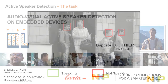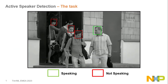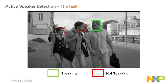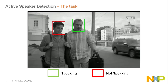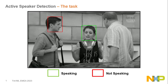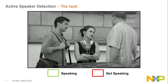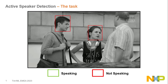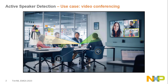What is audio-visual active speaker detection? It is the task of detecting who is speaking in a video by using both audio and visual modalities. Speakers are highlighted in green and non-speakers in red. There are plenty of use cases, mainly for speaker diarization, speech enhancement, and in our case, we are addressing video retargeting for video conferencing systems.